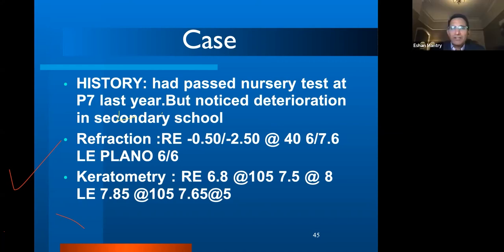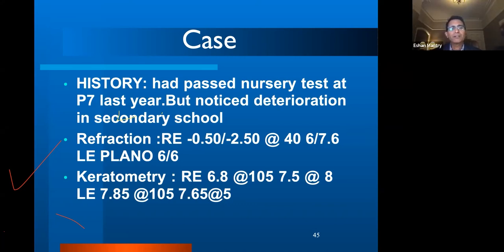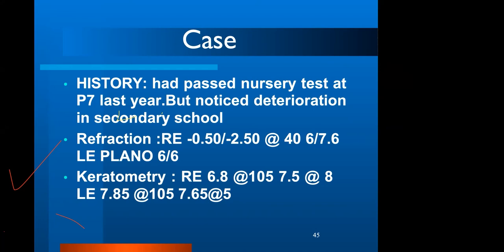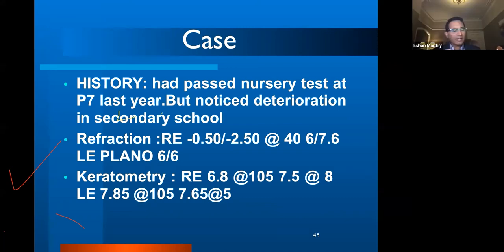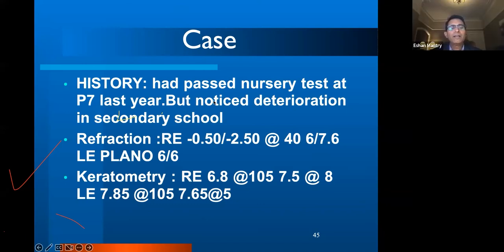Responses to the case question included keratoconus, suspect keratoconus, amblyopia with keratoconus, and prescribe glasses with referral — all reasonable. Amblyopia is a diagnosis of exclusion; keratoconus must be ruled out first. The optometrist who initially saw him didn't have topography but noticed a scissoring reflex. The answer: suspect keratoconus with routine referral. The left eye also showed form fruste keratoconus on topography, with a corneal thickness of 499, meaning subclinical keratoconus. On the question of whether cross-linking can be repeated: yes, usually after a year, though I haven't had to repeat yet. If it's progressing quickly after a year, that's a concern.